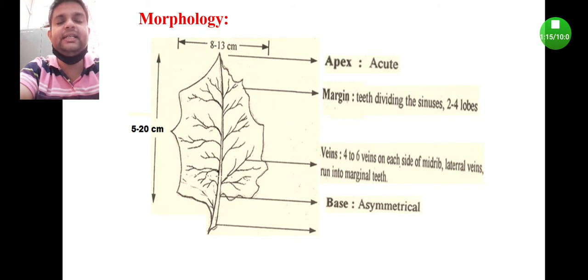Next, the base is asymmetrical. You can see the attachment of the lamina part, left and right side lamina part to the midrib, is at different junctions. That's why it is asymmetrical base, not symmetrical.